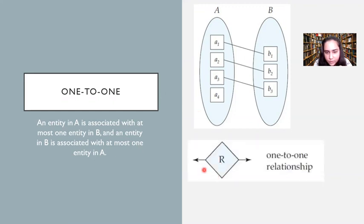To show it symbolically in an ER diagram, we use a rhombus in between for the relationship set between two entities. At the same time, we attach two arrows. Those arrows indicate that this is a one-to-one relationship.